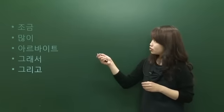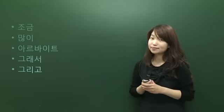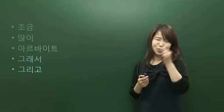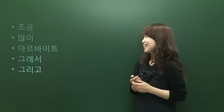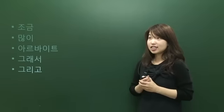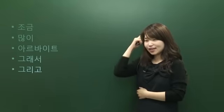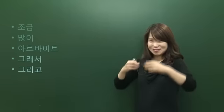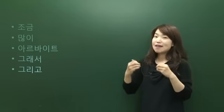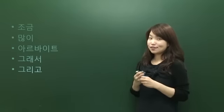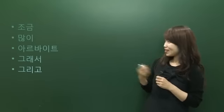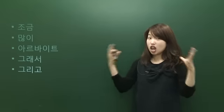조금. Say 조금 — a little. 돈 조금 있어요 — I have a little money. Right? 많이. 여자친구 많이 있어요 — I have many girlfriends. 있어요 means I have something. So 많이 means many, a lot.